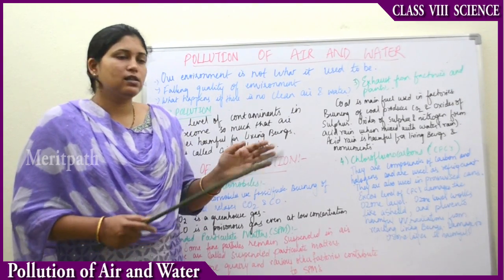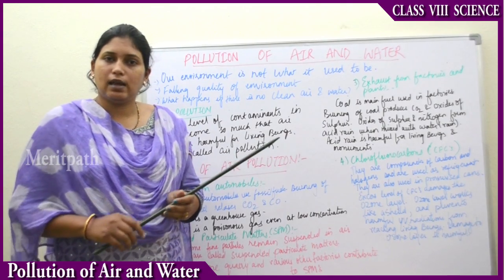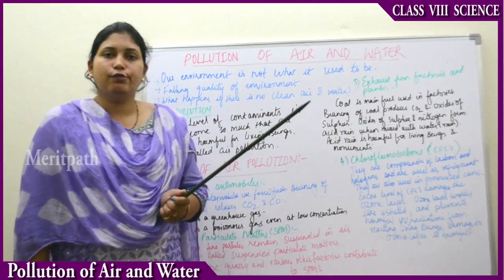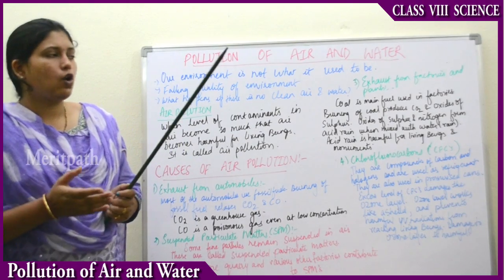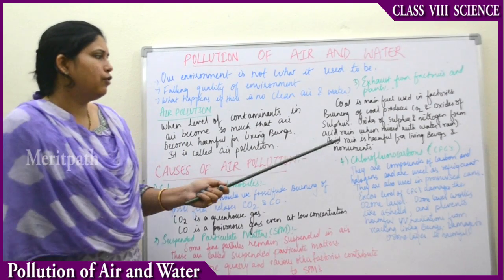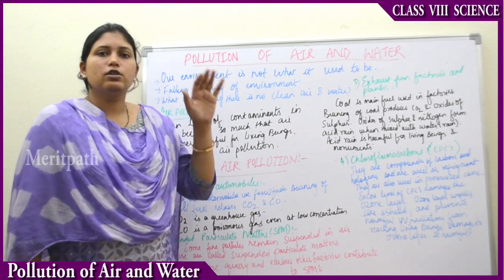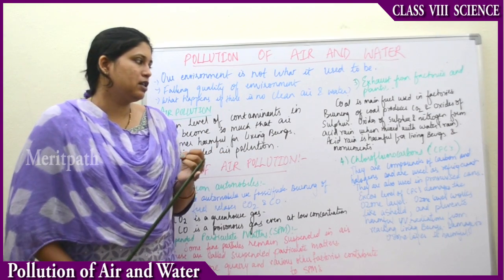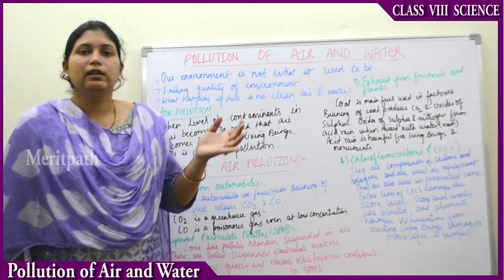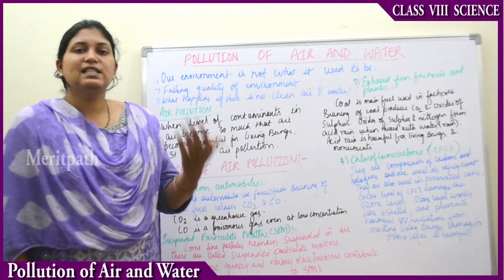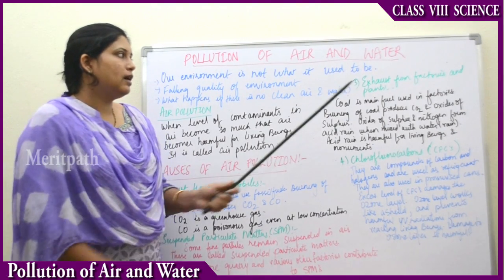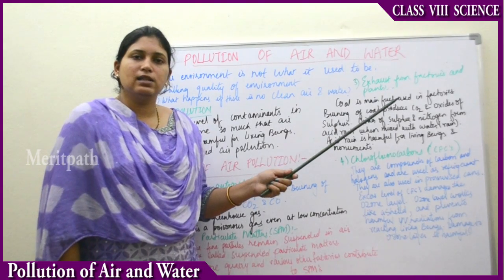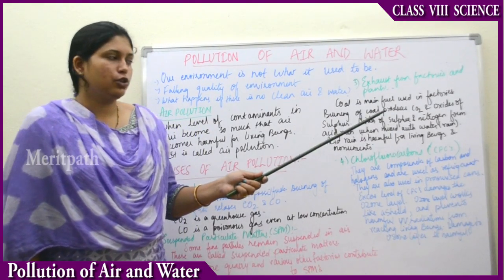Acid rain is harmful for all living organisms because it contains lots of harmful chemicals. It is also harmful for monuments — it corrodes the surface of monuments. If any monument is made of marble, the acid rain corrodes and discolours the marble. That is how exhaust from factories and plants causes air pollution.